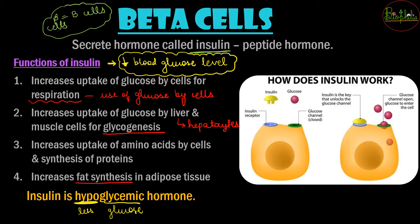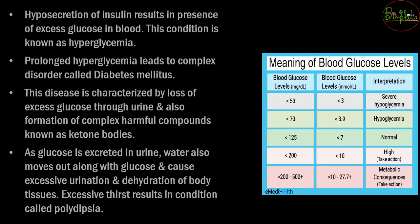Insulin works by binding to the insulin receptor on the cell. When insulin sits on its receptor, the glucose channel that was previously closed gets switched on and opens. Glucose molecules can then enter into the cell and be used for various purposes — respiration or formation of glycogen. Insulin essentially opens the glucose gates.